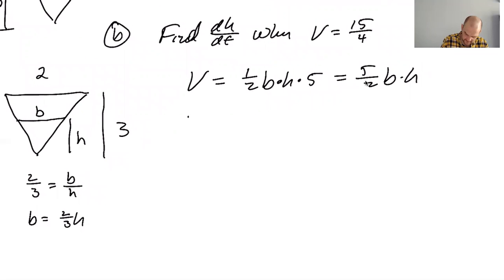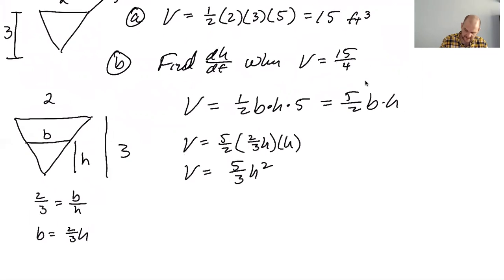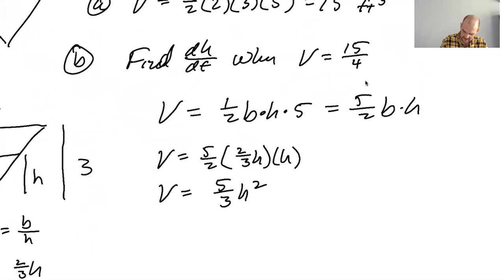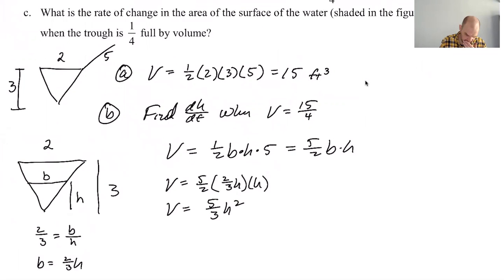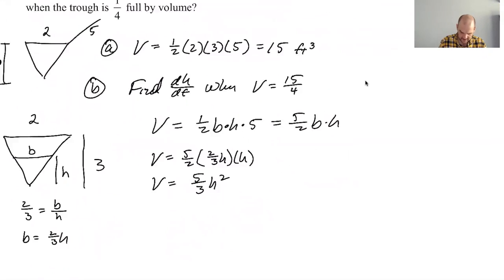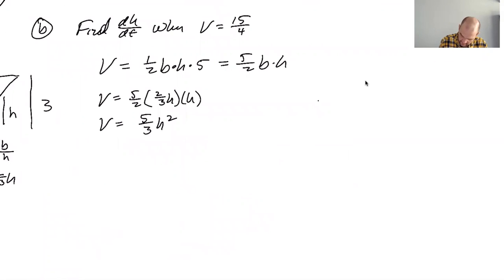So really I can say that the volume is five halves, base is two thirds of h times h. So the volume is actually five thirds h squared. And now I'm going to try to find dh/dt when the volume is 15 over 4. So then 15 over 4 is equal to five thirds h squared.